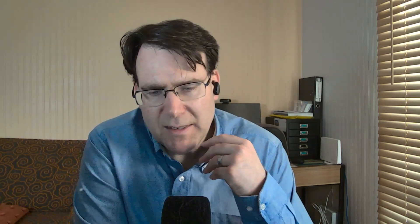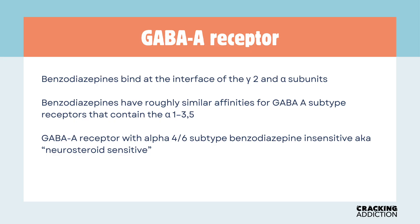Then we have the concept of benzodiazepine resistance. Changes in the receptor mean that the receptor cannot actually recognize and respond to benzodiazepines. In previous episodes of Cracking Addiction, I've discussed receptor pharmacology. Fundamentally, the benzodiazepine receptor changes from sensitive to non-sensitive states associated with the use of alpha subunits. Alpha-4 and alpha-6 subunits are not sensitive to benzodiazepines — they're what we call neurosteroid-sensitive.